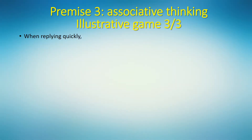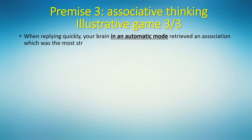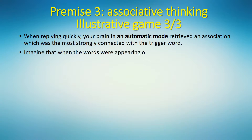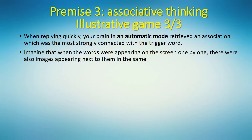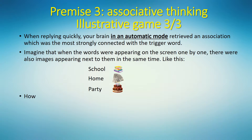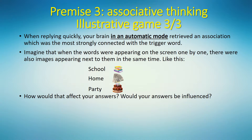So, when replying quickly, your brain, largely in automatic mode, retrieved the association most strongly connected with the trigger word. Now imagine that when the words were appearing on the screen one by one, there were also images appearing next to them at the same time. How would that affect your answers? Would your answers be authentically yours, based on your personal associations? Or would your answers be influenced?